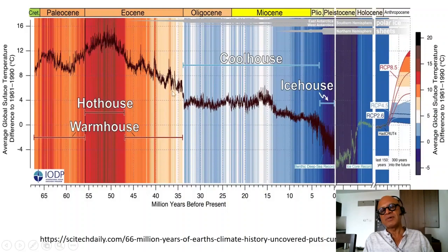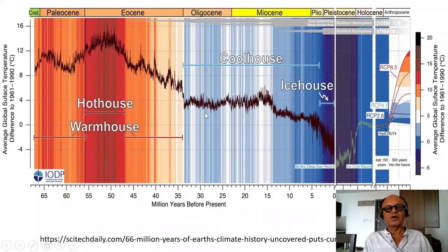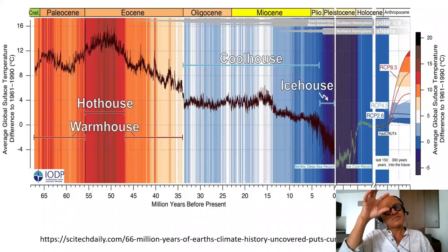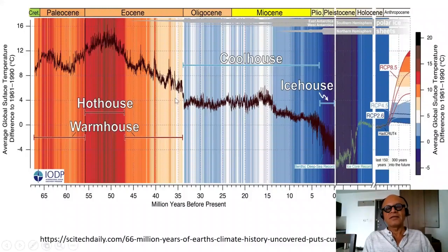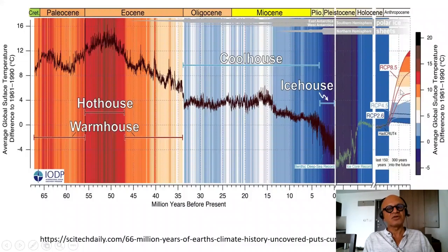Tectonics and weathering may be critically involved in the cooling that started about 50 million years ago. The Indian subcontinent crashing into the Asian landmass built up the Himalayas and exposed a lot of weatherable materials. The monsoon was set up, so weathering rates went up tremendously due to new material and a lot of water. This is considered one of the reasons to explain the drop in temperature and CO2 that accompanied it.